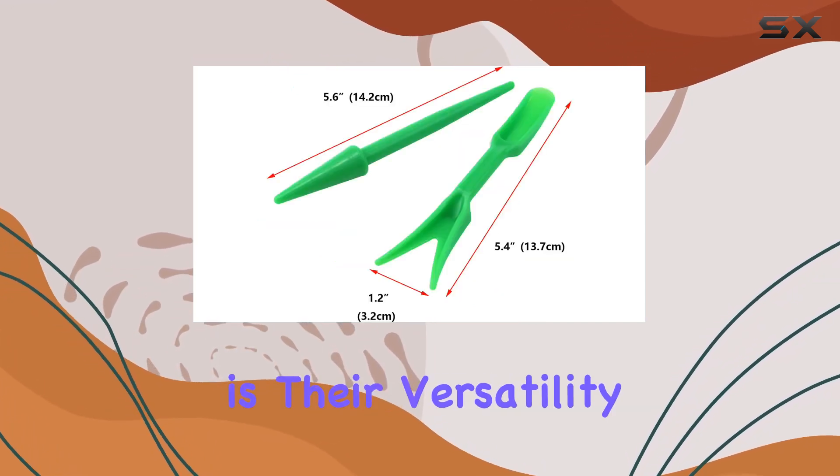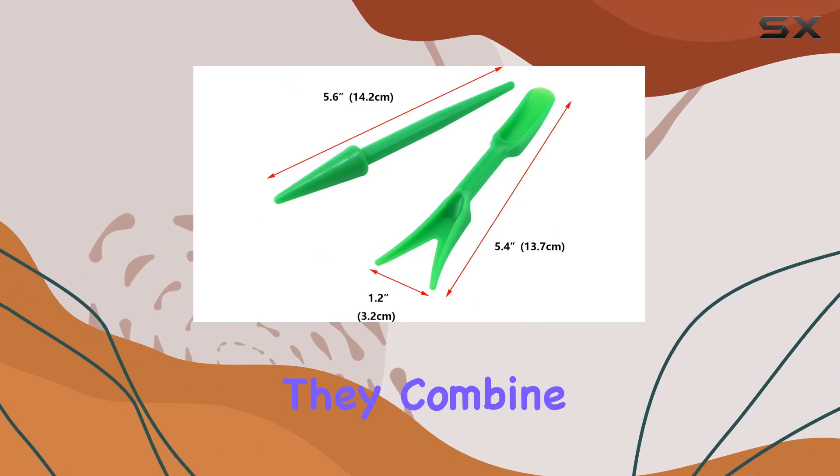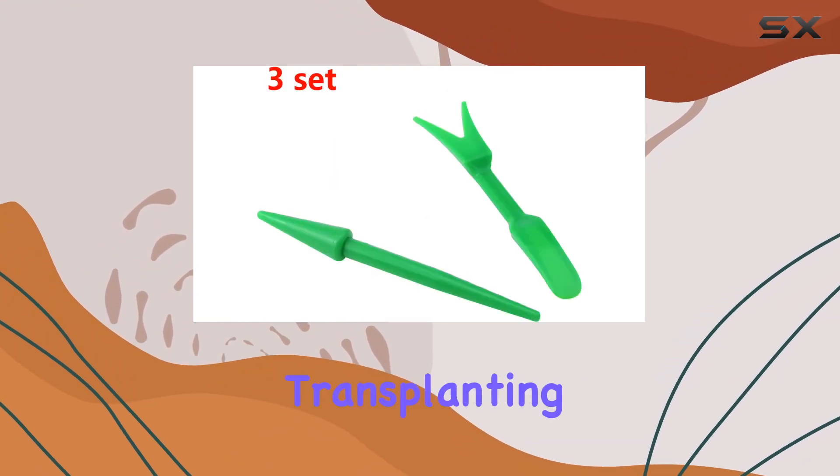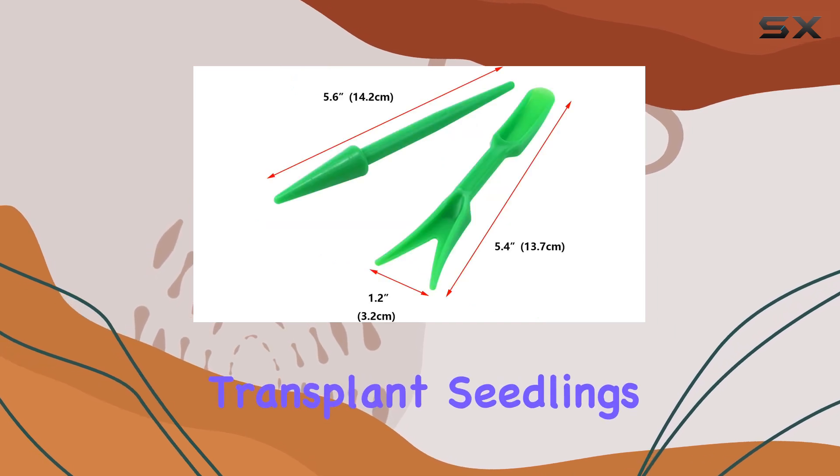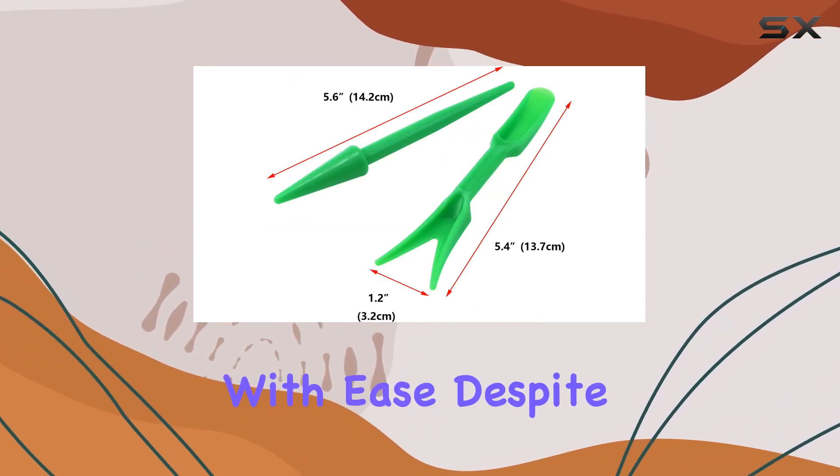One of the standout features of these tools is their versatility. They combine a seedling tool with a dual-use transplanting tool, allowing you to loosen soil, safely transplant seedlings, and handle other gardening tasks with ease.